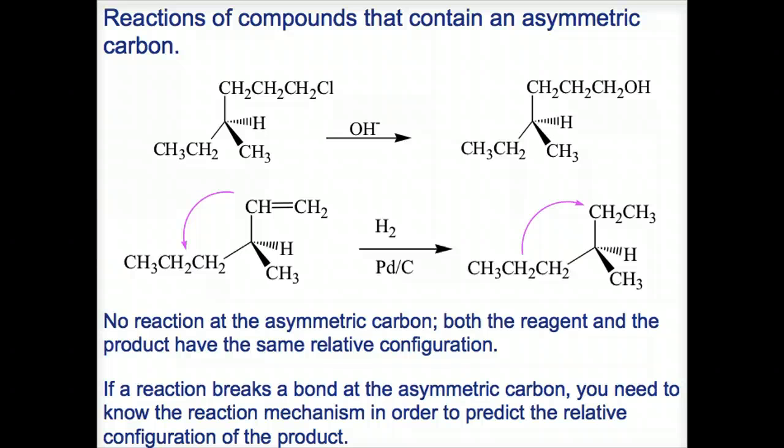Let's talk about how reactions can change configuration. Reactions of compounds that contain an asymmetric carbon are illustrated here. If a compound with an asymmetric carbon undergoes a reaction and the reaction does not break any of the four bonds to the asymmetric carbon, then the relative positions of the groups will not change, and the configuration remains the same.